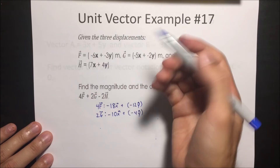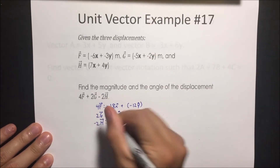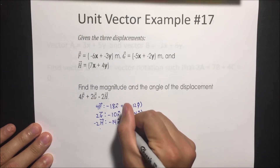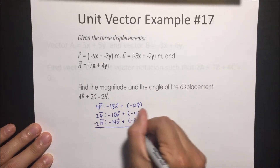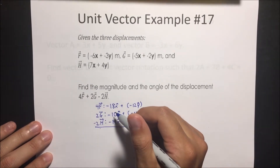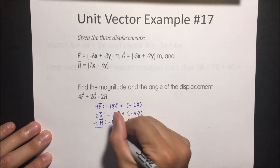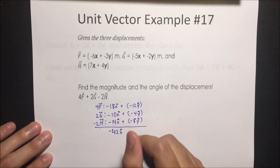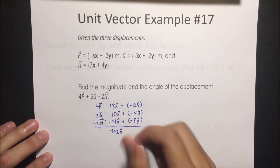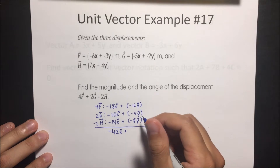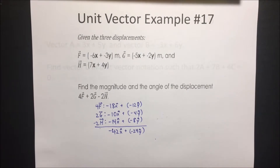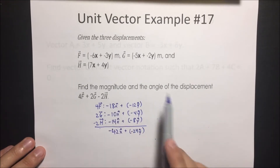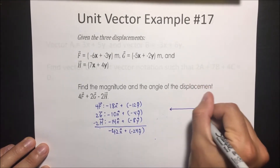And negative 2H — we also flip the sign — so this is going to be negative 14 in the x direction plus negative 8 in the y direction. Adding all of this together, we get negative 42 in the x direction and negative 24 in the y direction. Now we draw this out: 42 meters to the left and 24 meters down.